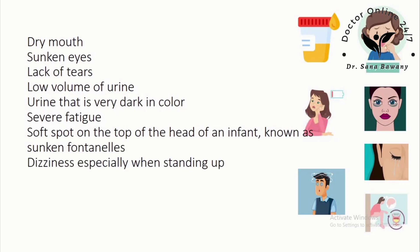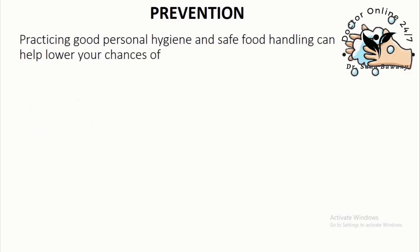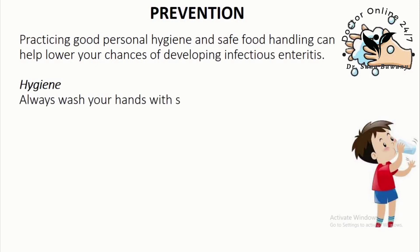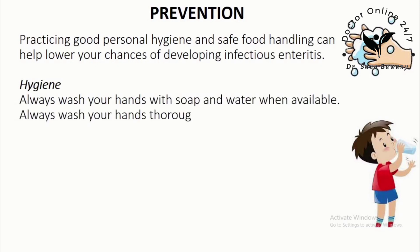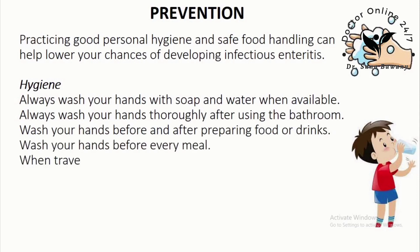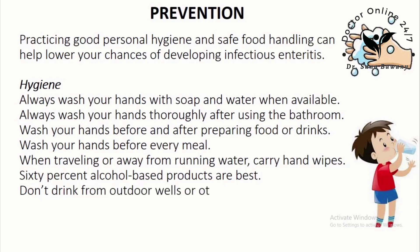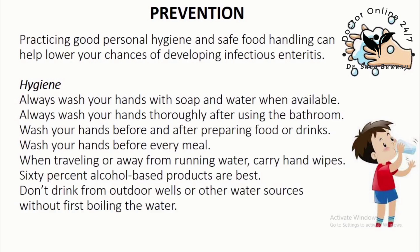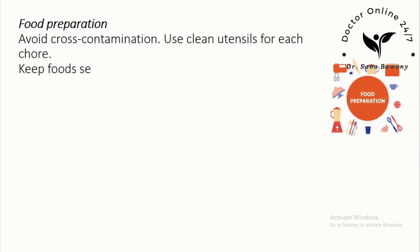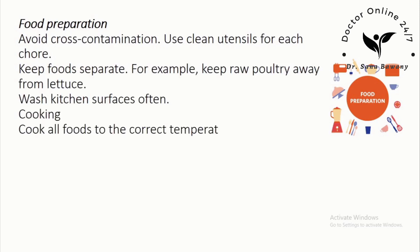How to prevent enteritis: Practicing good personal hygiene and safe food handling can help lower your chances of developing infectious enteritis. Always wash your hands with soap and water after using the bathroom, before and after preparing food, and before every meal. When traveling, carry 60% alcohol-based hand wipes. Don't drink from outdoor wells without boiling the water first. For food preparation, avoid cross-contamination, use clean utensils, keep foods separate, and wash kitchen surfaces often. Cook all foods to the correct temperature using a food thermometer.